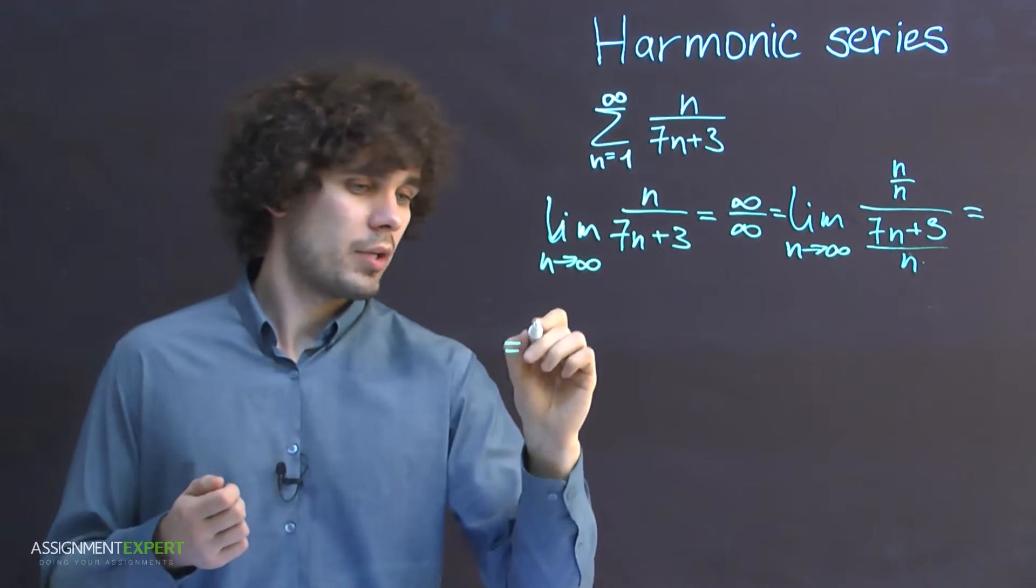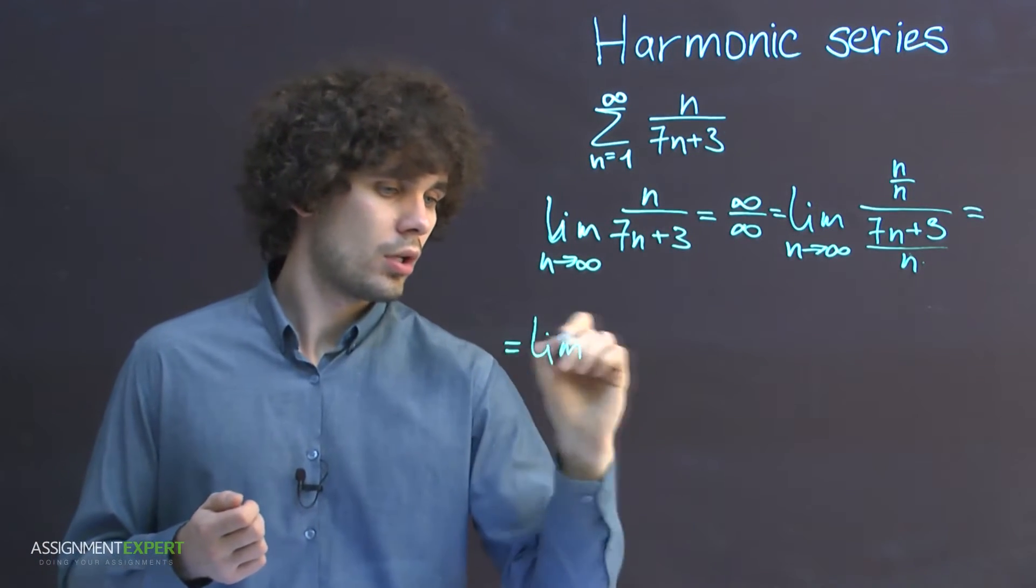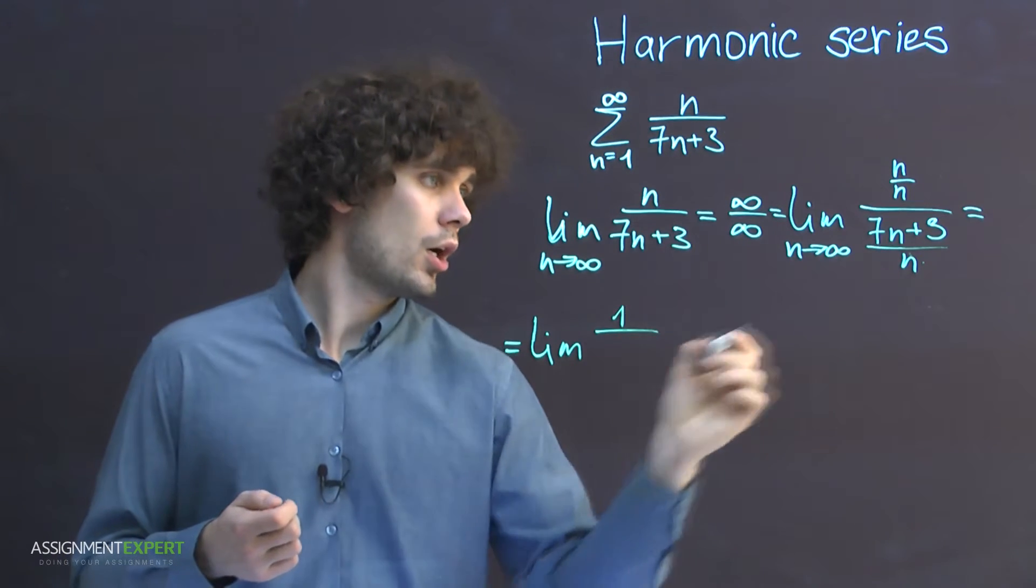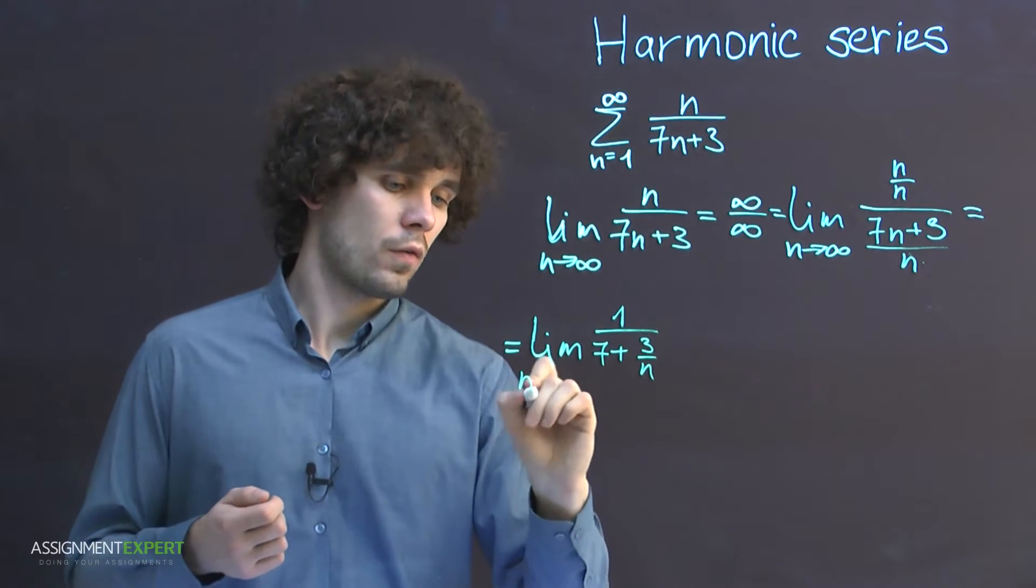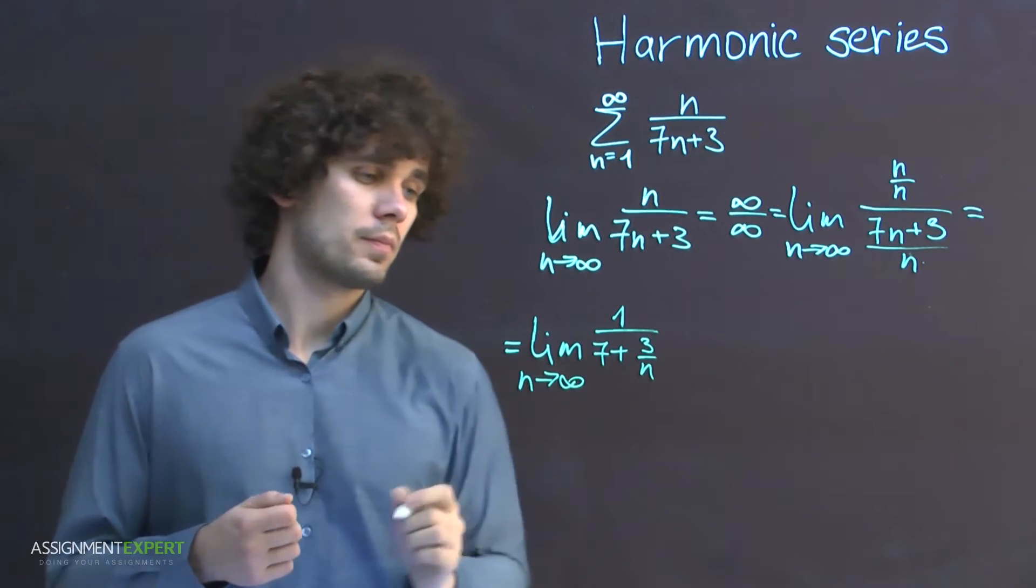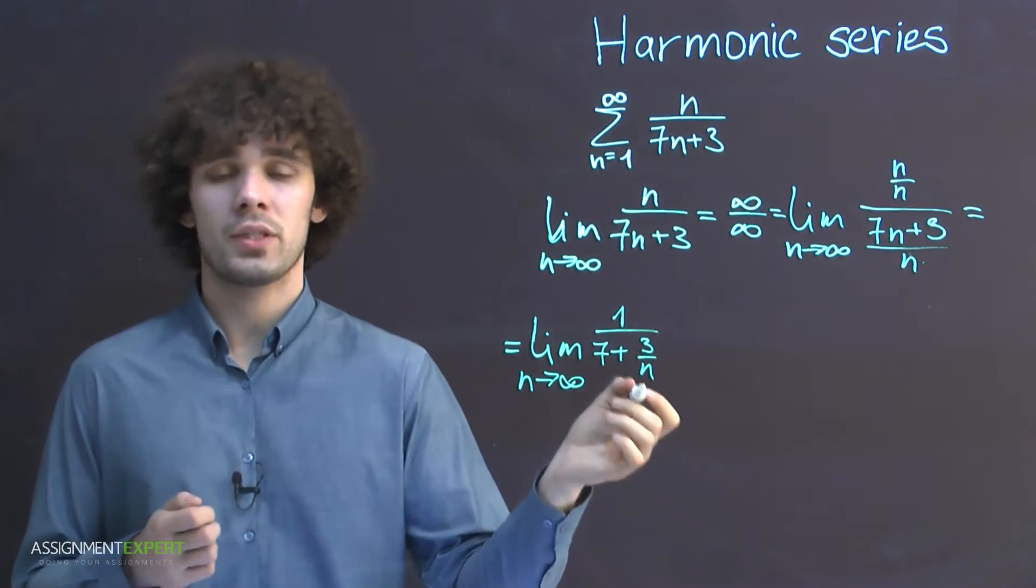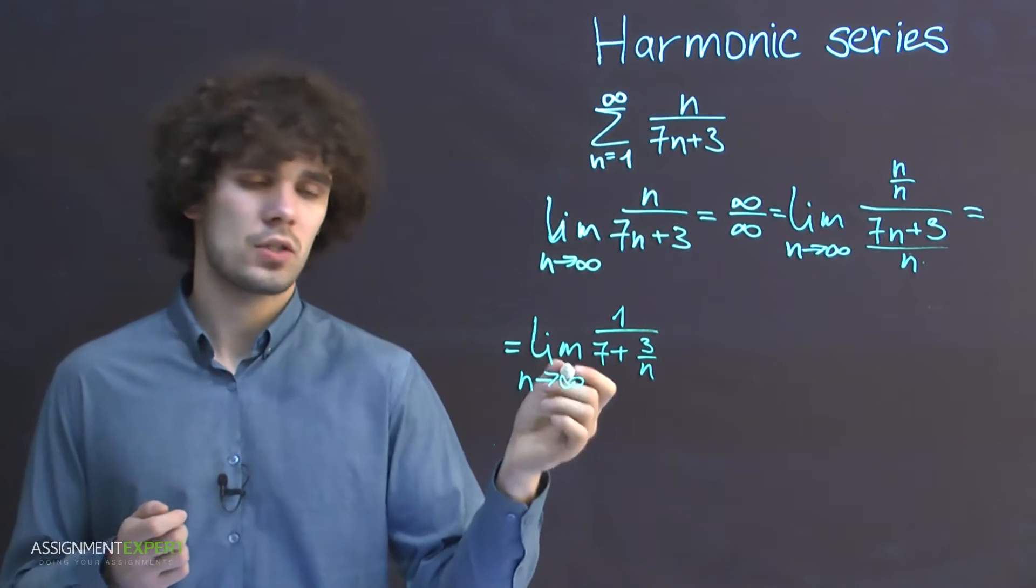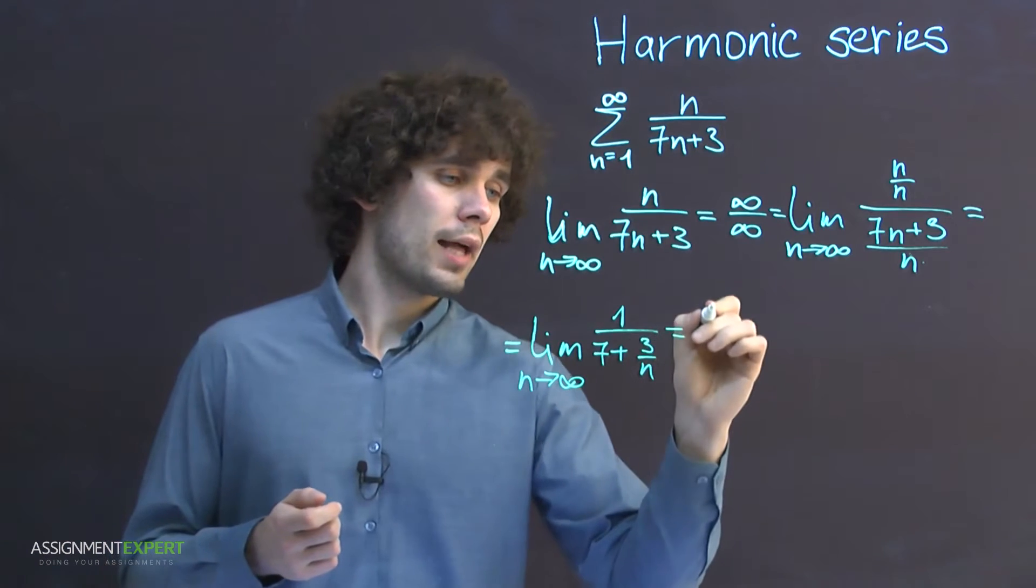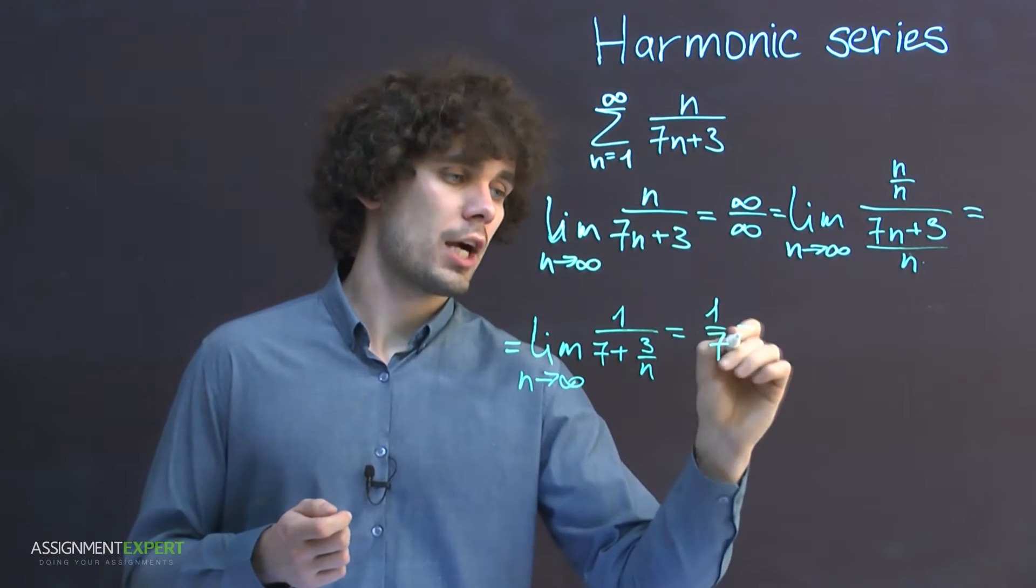This gives us limit of 1 over 7 plus 3/n for n tends to infinity. The last term tends to 0 because we have n in the denominator and n tends to infinity. So we are left with 1/7, which is not equal to 0.